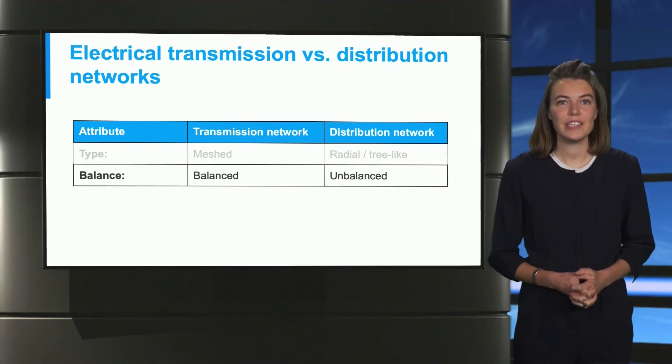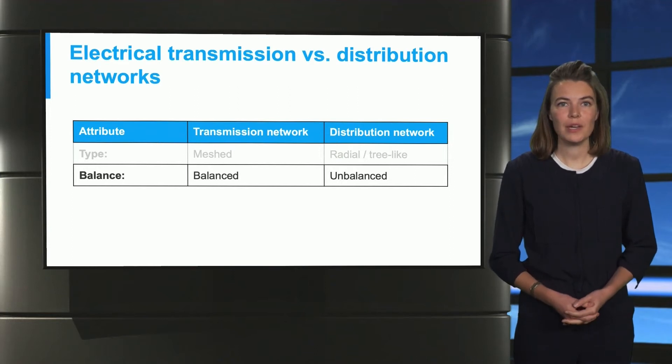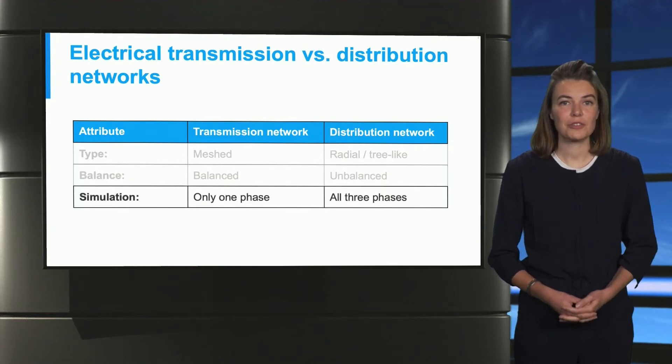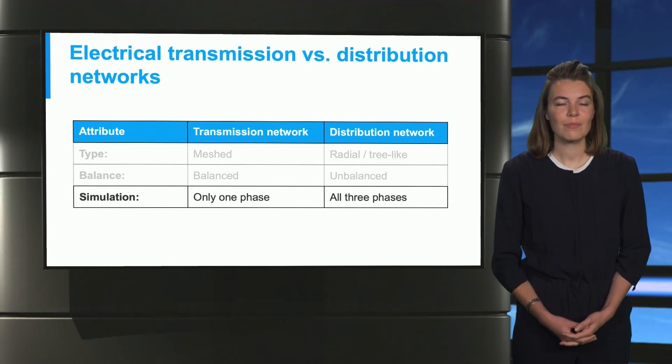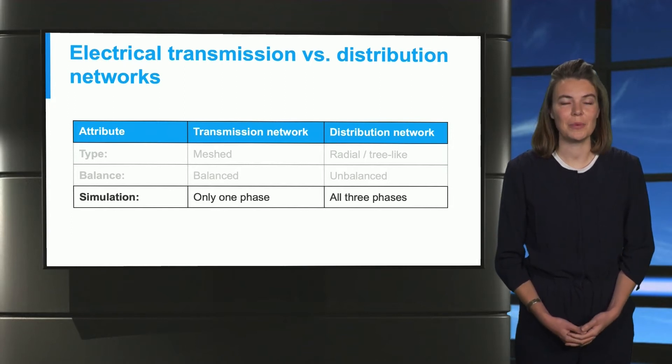Both transmission and distribution networks have three phases, but in the transmission network they are balanced and in the distribution network they are unbalanced. The consequence is that for a transmission network it is sufficient to simulate only one phase, because all phases are in balance. The other phases will simply be a phase shift of the simulated phase. Due to its unbalanced nature, you have to compute all three phases separately in a distribution network.